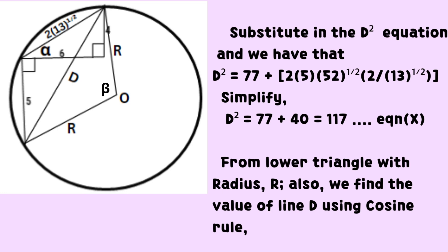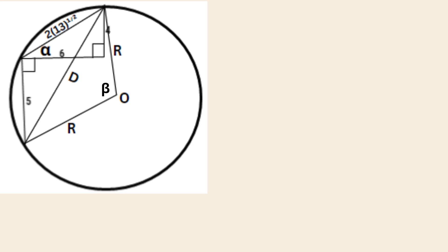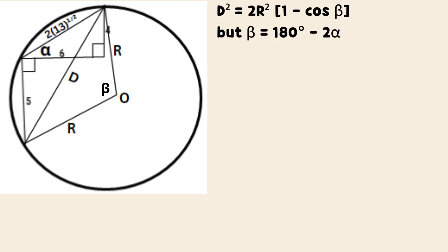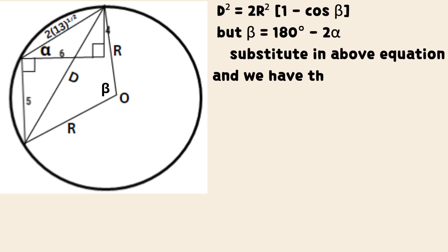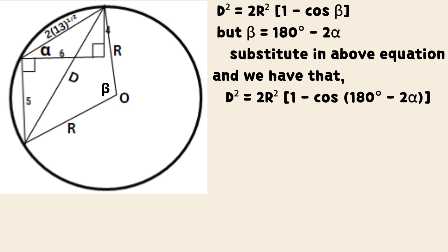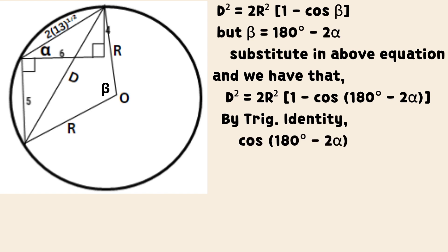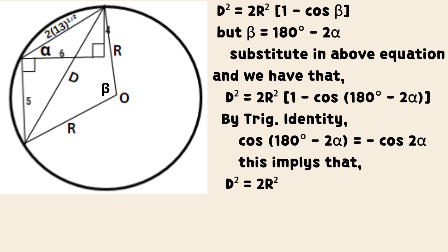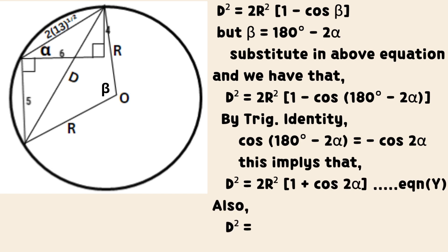Also, we already obtained an equation in D squared which we call equation X. Simplifying angle beta and substituting into the above equation, we have the equation shown on the screen. Simplifying further, we obtain that D squared equals the product of 2, R squared, and the sum of 1 and cosine 2 alpha, which we call equation Y.